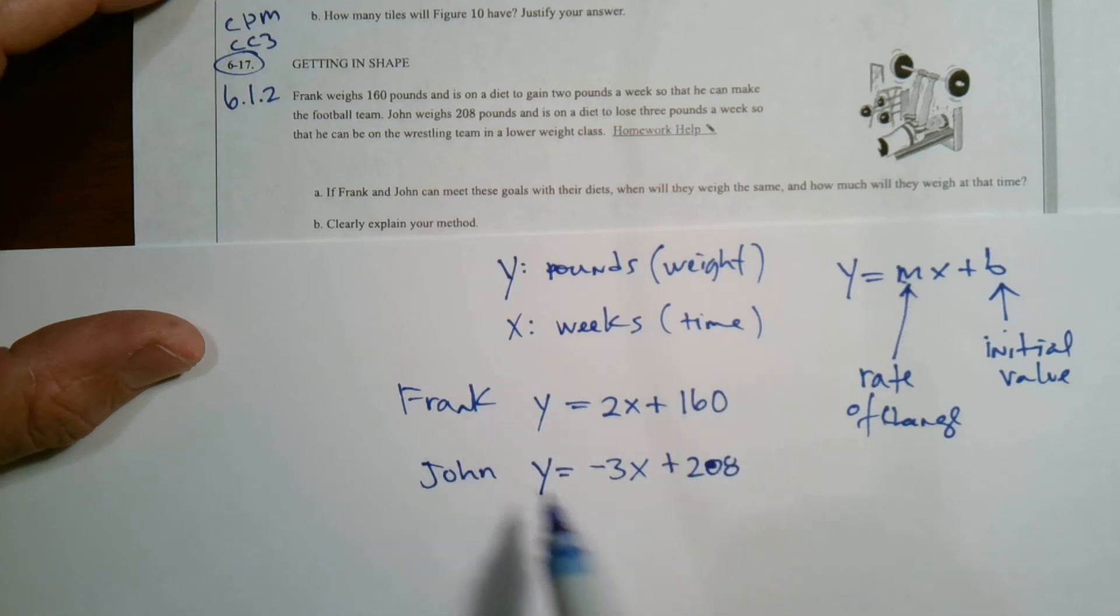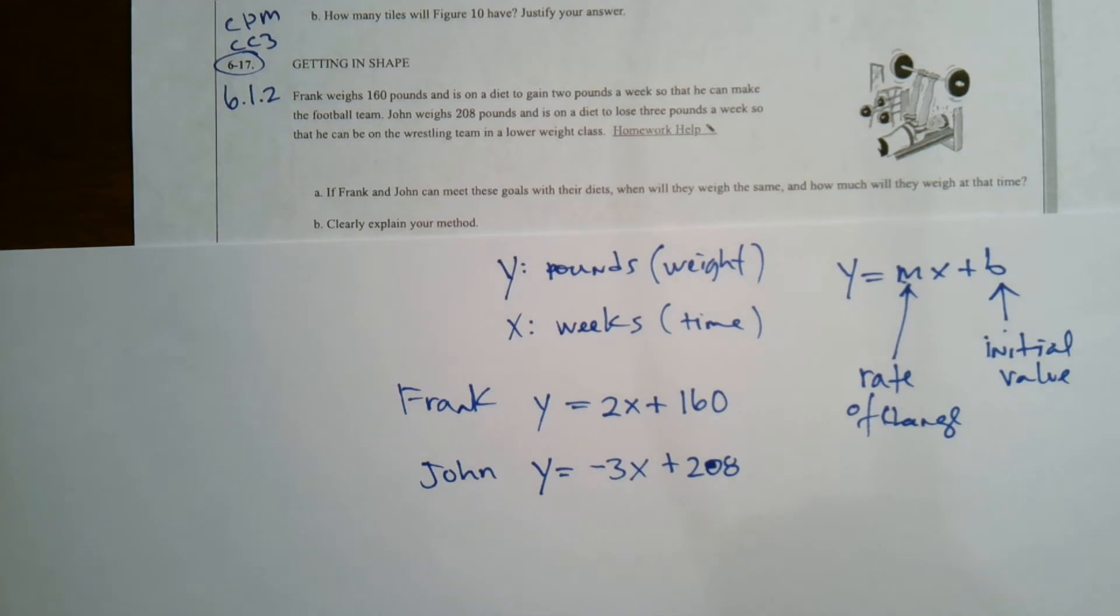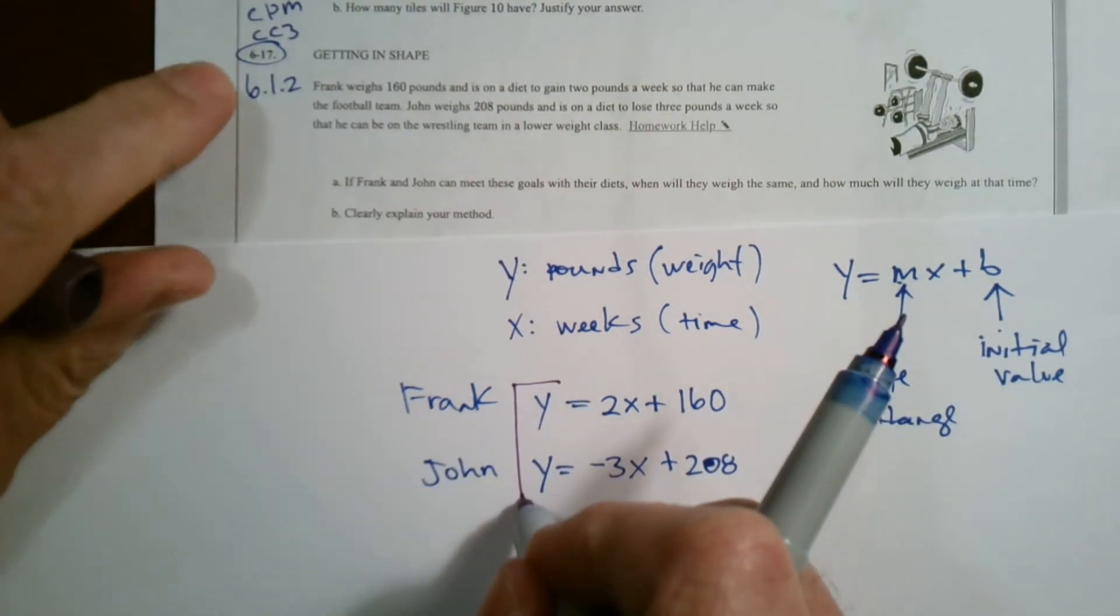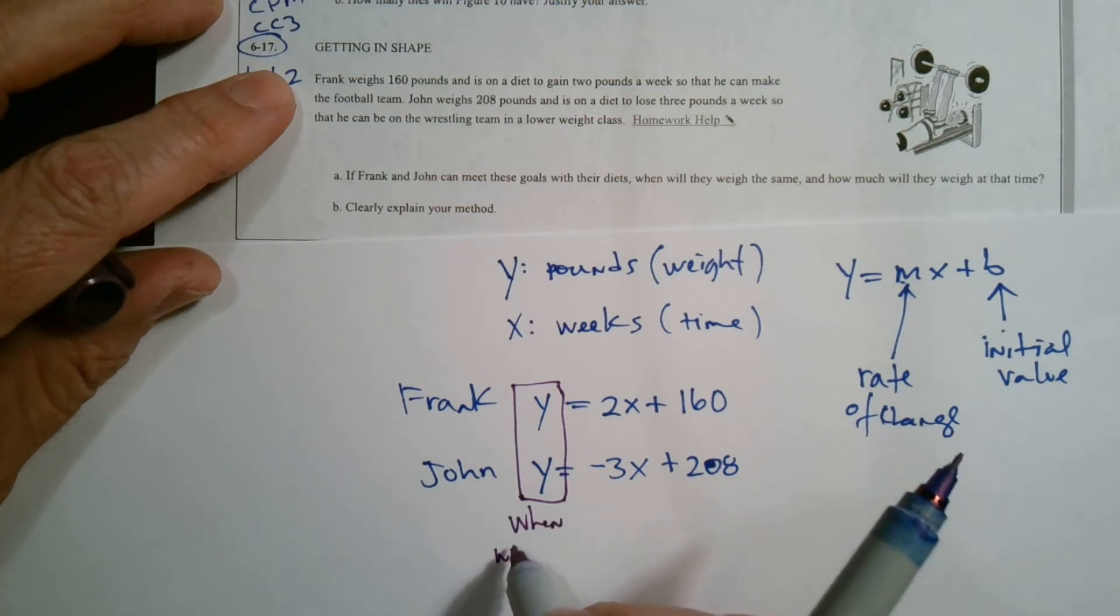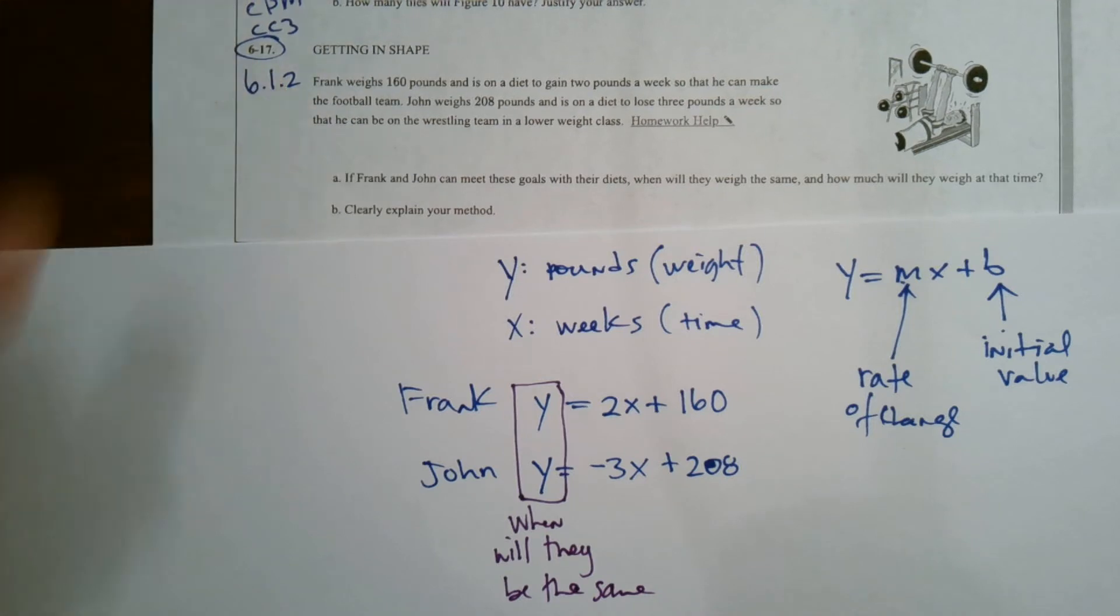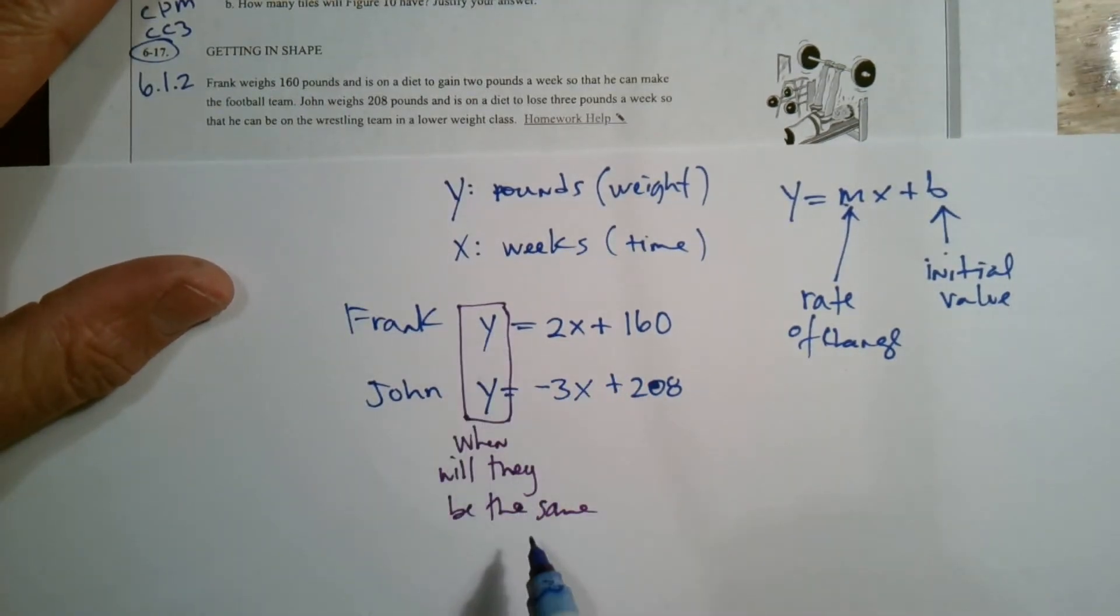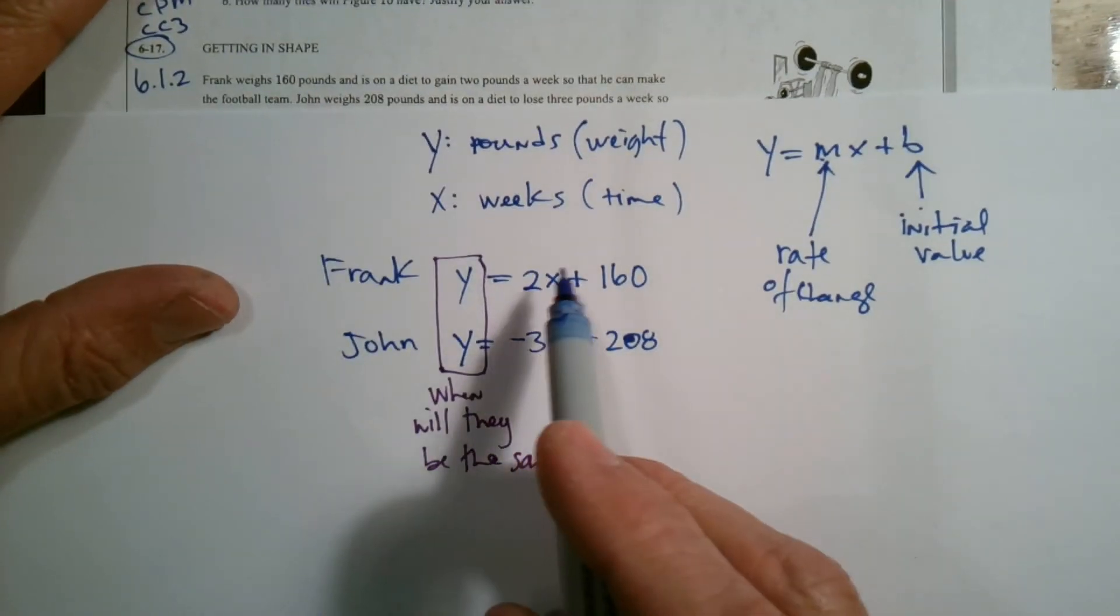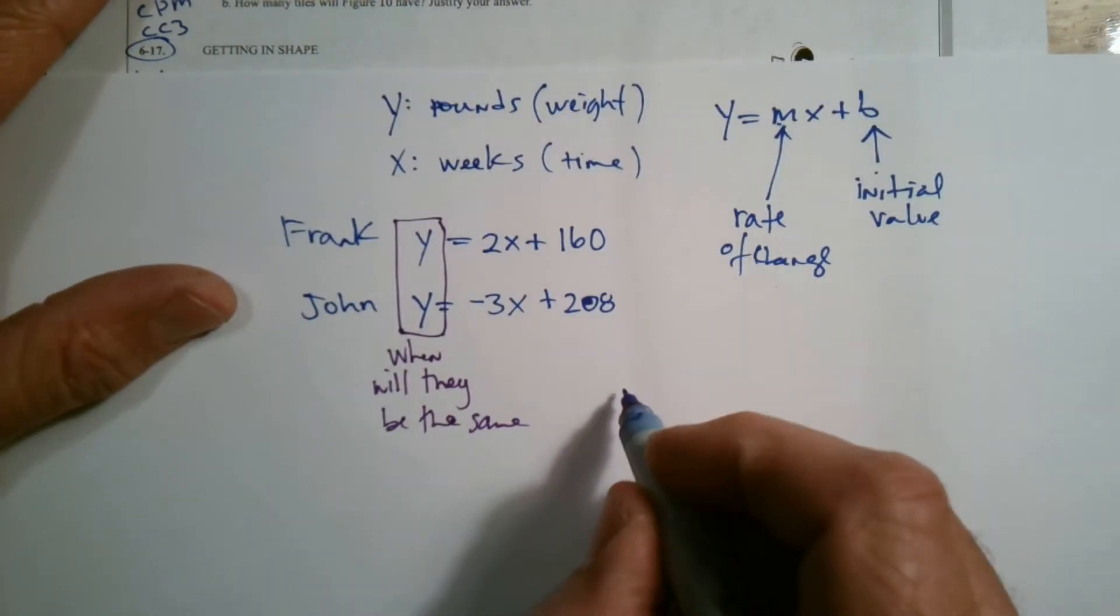So I want to know when will these two guys be the same weight? So now the question is when will these two Ys be equal? That's my question. When will they be the same? Well, if we want to figure out when they're going to be the same, then we just need to take it and set them equal to each other. So that's where this equal values method comes into play where I'm going to set that equal to that, because that's when those Ys would be equal.